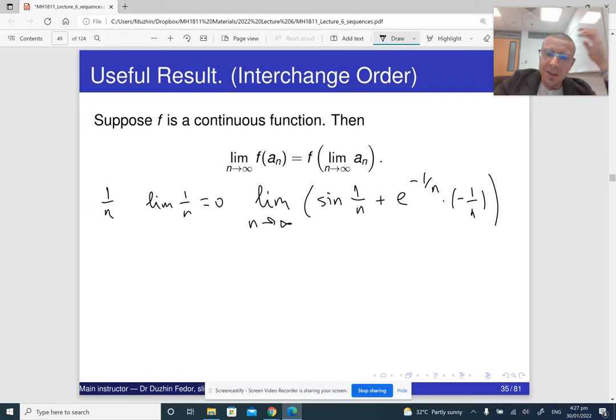So what it means is you can think of one over n as x. This is something like your x. And then if you introduce a function f of x, which is sine x plus e to the minus x times minus x...